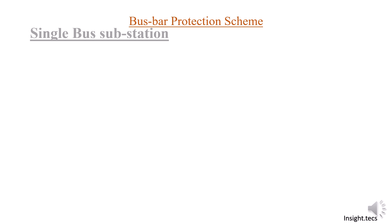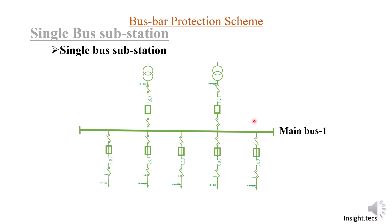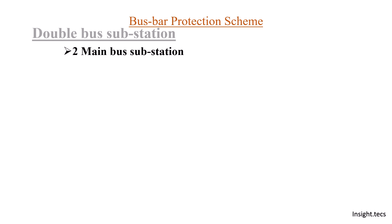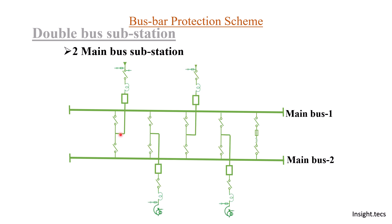In today's video we will be learning about how to use a two bus substation as a three bus substation — how we can get the benefits of a three bus scheme using just two buses. For the single bus scheme we have already considered main bus one with all feeders connected to it. For the double bus scheme with two main buses, both buses are connected with a selector isolator so you can select the bus to which you want to connect a particular equipment.